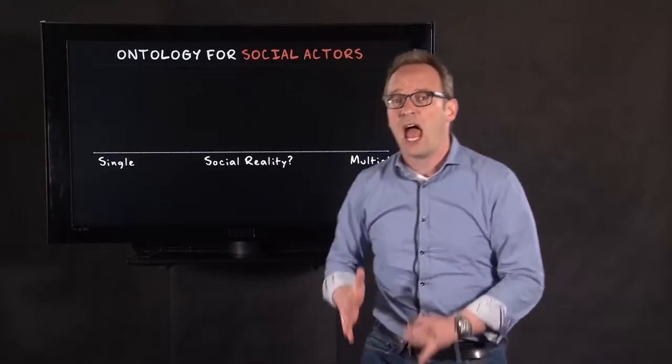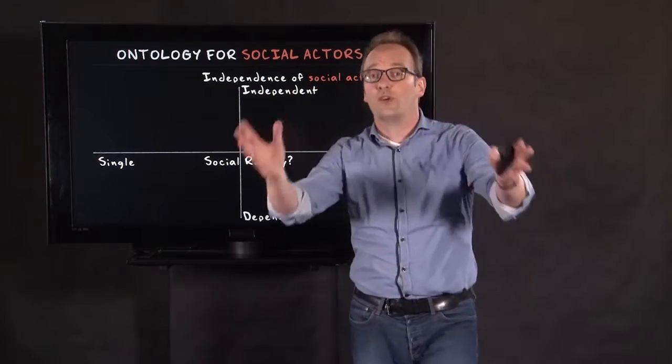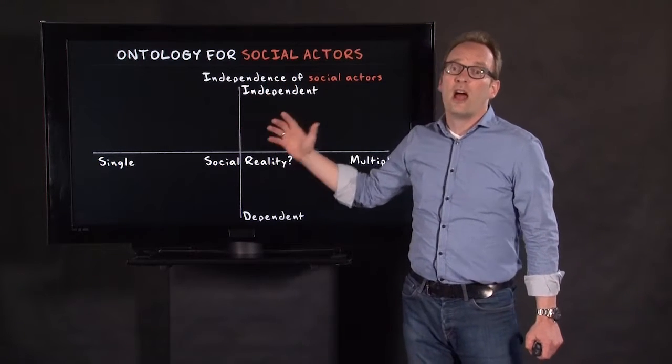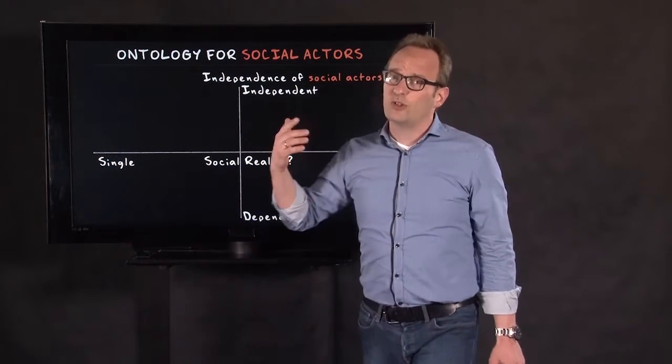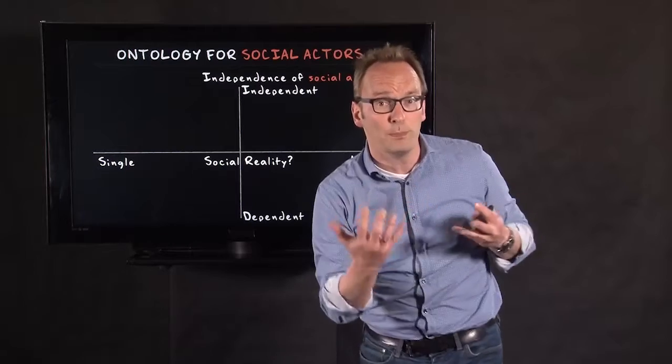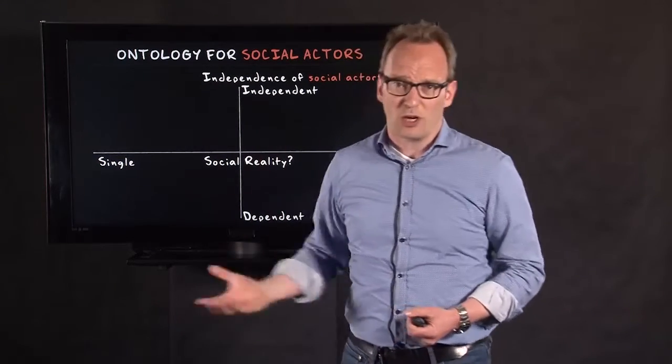And in this lecture, I would like to explain how this dimension as well as this dimension lead to a variety of views on ontology for social actors. Because this second dimension is a dimension of independence. Is the social reality out there, and is it independent from us? Or is the social reality dependent from us? Are we creating social reality in interaction as local accomplishments? Are we creating multiple social realities or a single one? And there are different stances on ontology for social actors.